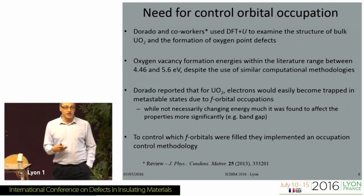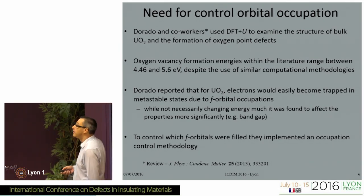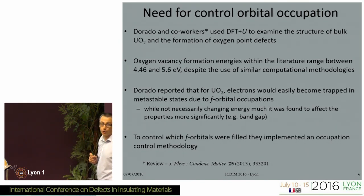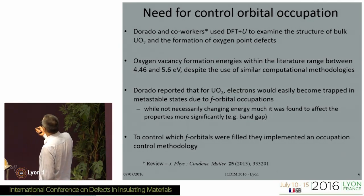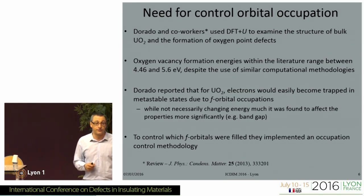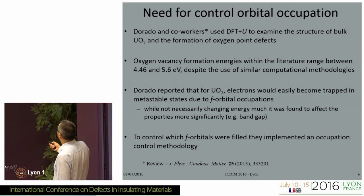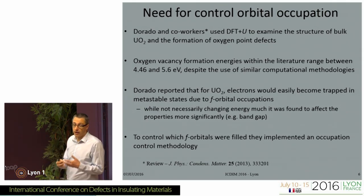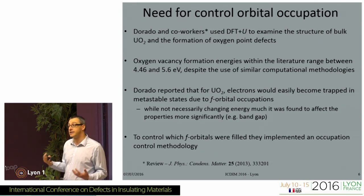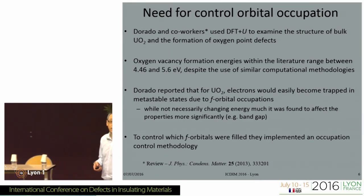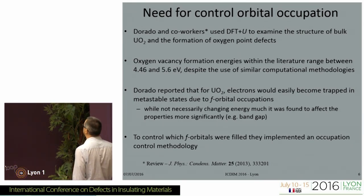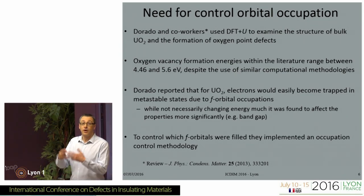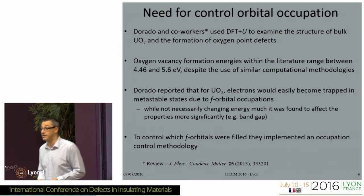Unfortunately, this actually leads to many, many metastable local minima — the electron can go in various places. Probably the most comprehensive work is by Dorado, who used this to look at UO₂. In the literature for UO₂, there's a wide range of defect energies for the oxygen vacancy, all of which — if you look at the simulation methodologies — should really be the same. Basically, different calculations have localized to different F orbital occupations, different atom sites for the electrons, and all of them are close in energy. Depending on how you set up your system and what program you use, you get a different metastable local minimum.